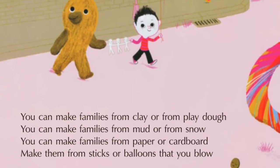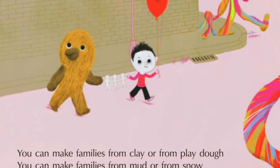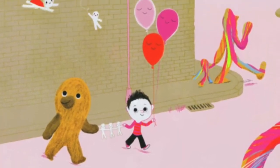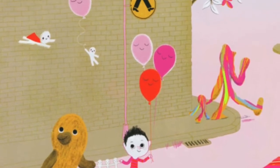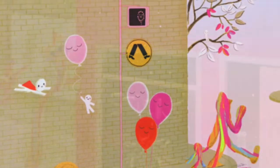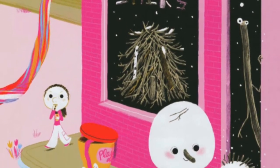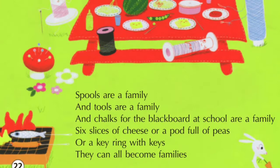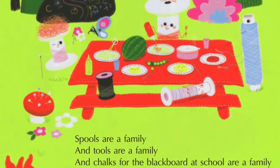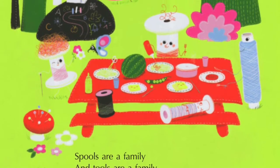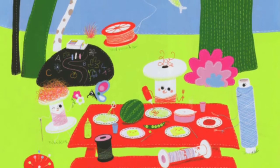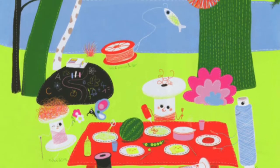You can make families from clay or from play-doh, you can make families from mud or from snow. You can make families from paper or cardboard, make them from sticks or balloons that you blow. Spools are a family and tools are a family, and chalks for the blackboard at school are a family. Six slices of cheese or a pod full of peas, or a key ring with keys — they can all become families.